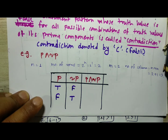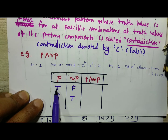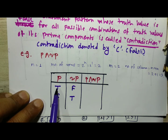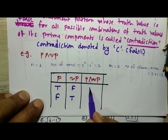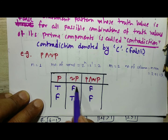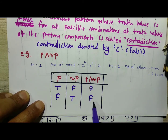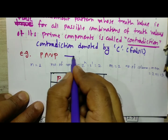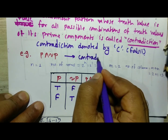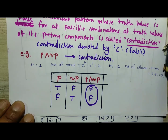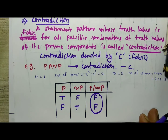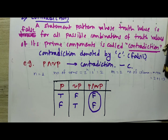For the AND operation, both statements must be true for the result to be true; otherwise it is false. First statement is P and second is ¬P. So: true and false gives false; false and true gives false. Therefore all possible combinations give false, meaning our statement pattern has truth value false throughout. This is called a falsie or contradiction, denoted by C.